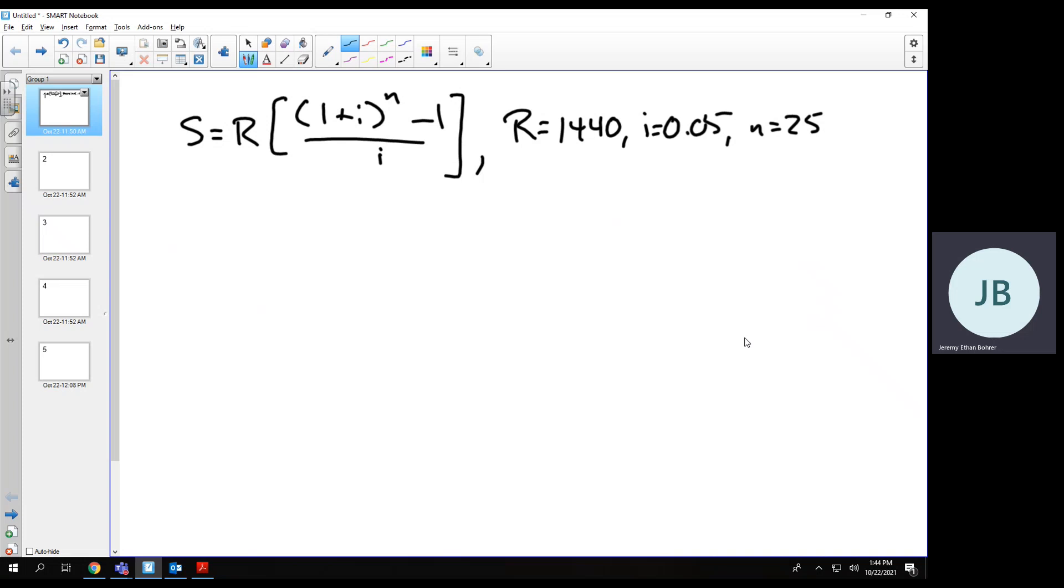Then S equals 1440 times 1.05 to the 25th power minus 1 over 0.05, which gives approximately $68,727.02.